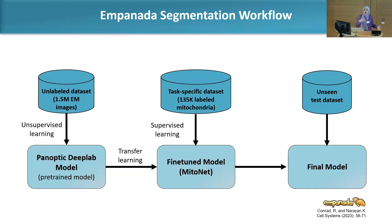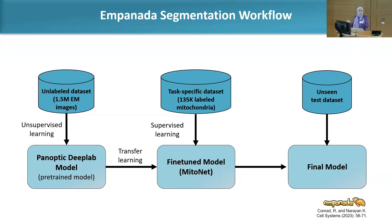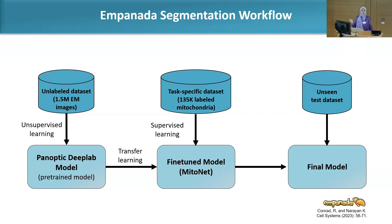The Empanada workflow, as described in the paper, is first pre-trained on an unlabeled dataset of 1.5 million images from different experiments, tissues, and labs using unsupervised learning with the panoptic deep lab model. We then do transfer learning on a specific task — using mitochondria, the software trained on almost 135,000 labeled mitochondria via supervised learning — and get a final model to test on unseen data. In our lab, we fine-tune this on specific organelles from our airway cells.